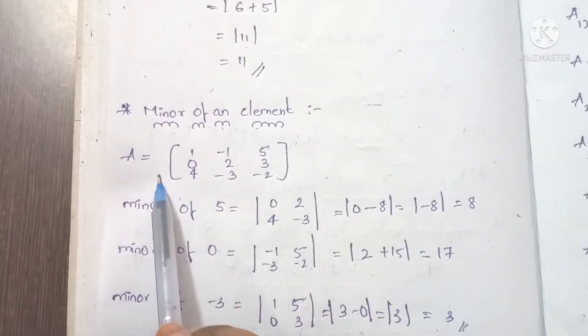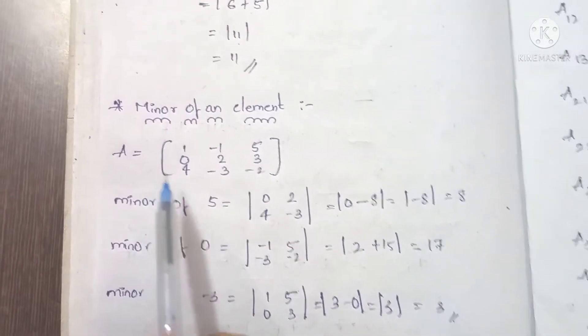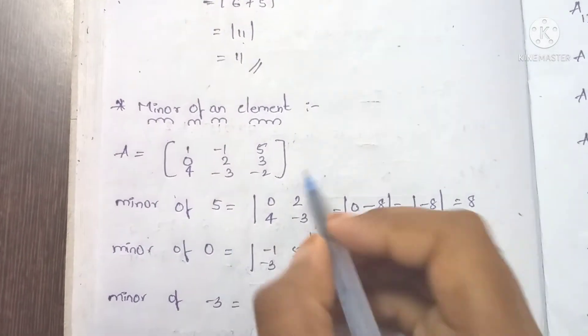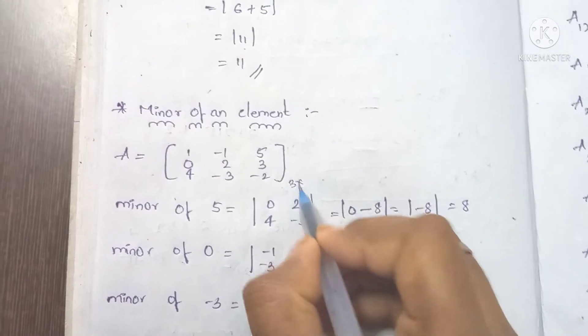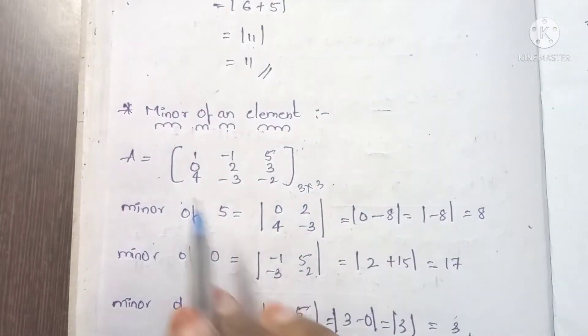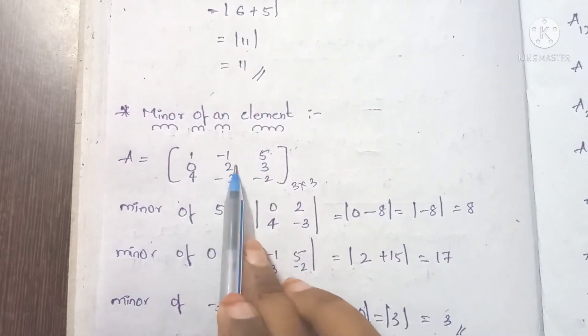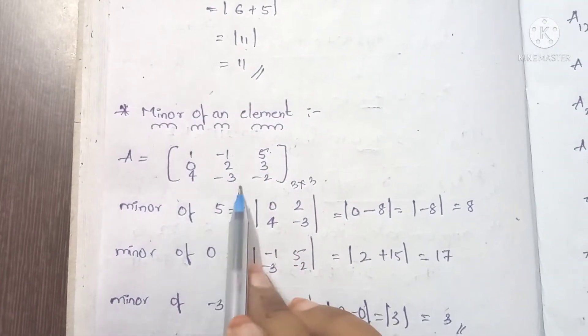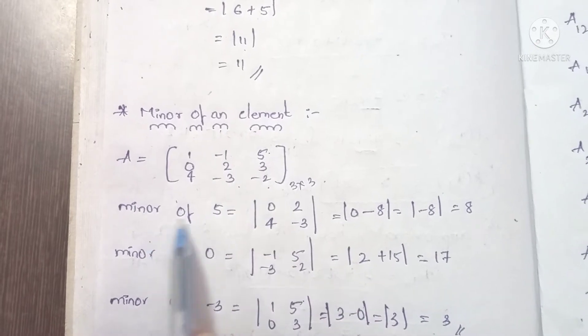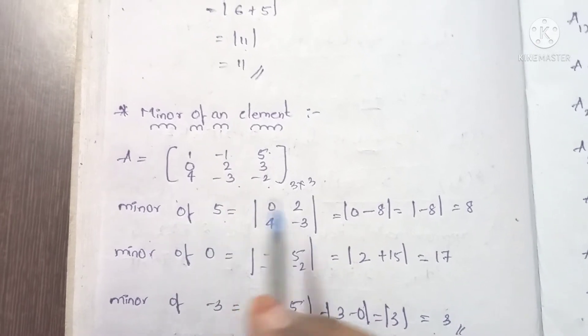Next, the minor of an element. Let matrix A be the 3×3 matrix: [1, -1, 5; 0, 2, 3; 4, -3, -2]. We will find the minor of the element 5.